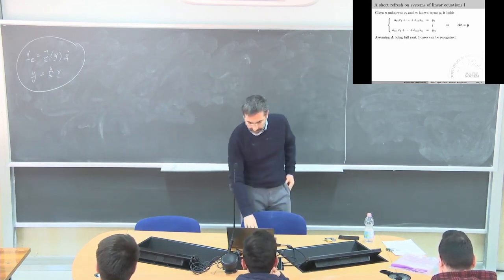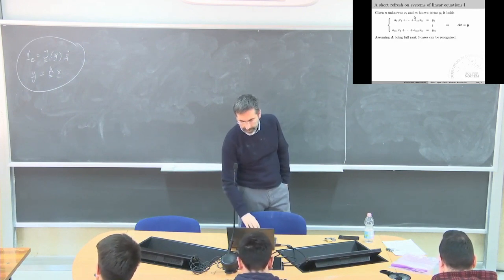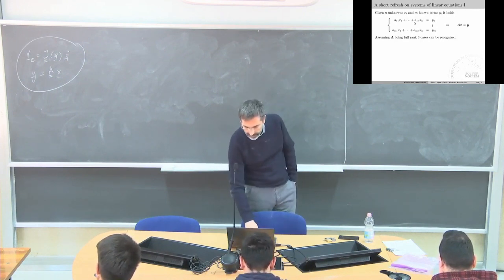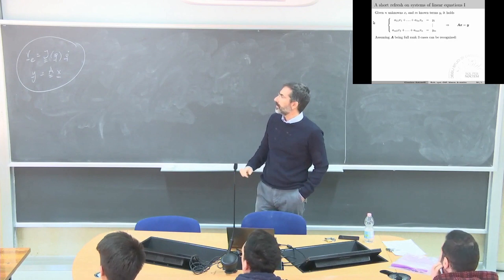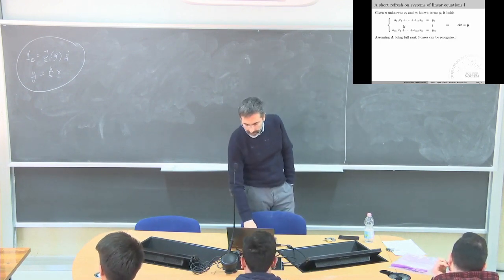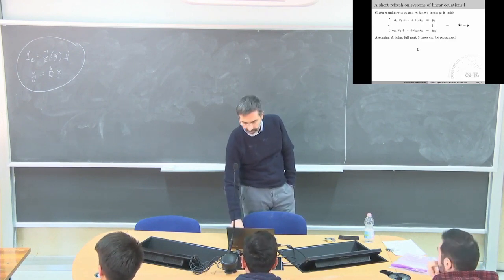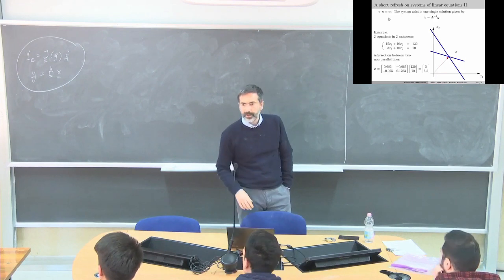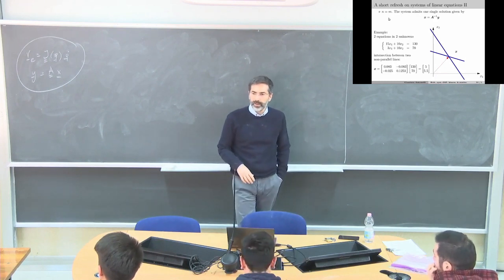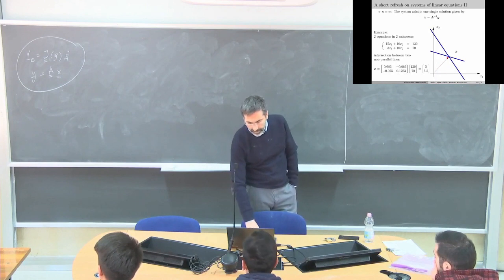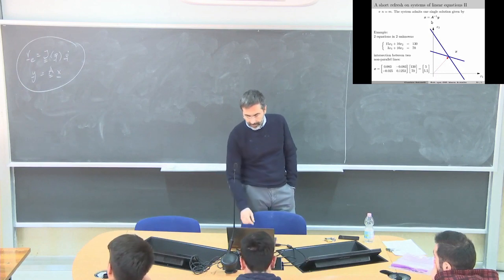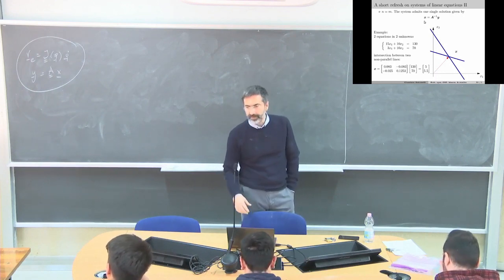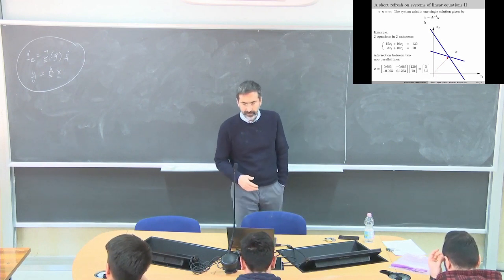We do have N unknowns and M equations. Linear equations. I have a linear combination of real numbers of the unknowns, equal some known terms. We can face three possibilities. The number of unknowns is equal to the number of equations. The matrix A, assuming it is full rank, can be inverted, and we simply have X is equal inverse of A multiplied Y.